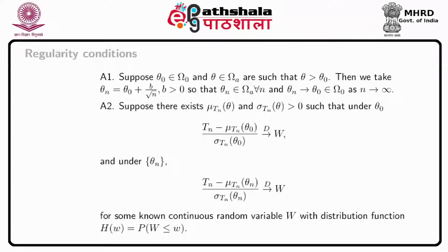Under theta_n, T_n minus mu(theta_n) of T_n divided by sigma(theta_n) of T_n also converges to the same distribution of W, where W has some known continuous distribution with distribution function H(W) equal to probability that W is less than or equal to small w. In particular, W can be taken as Normal(0,1) distribution.